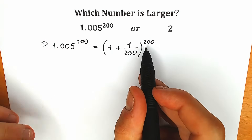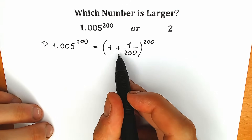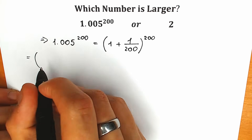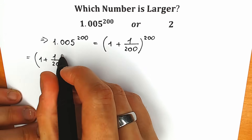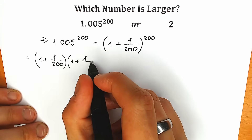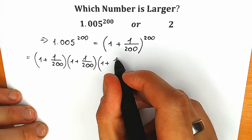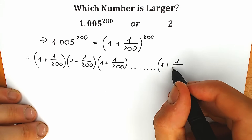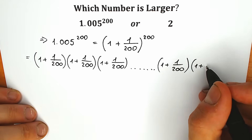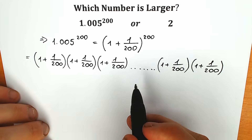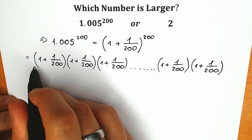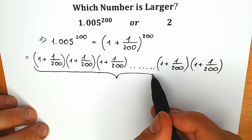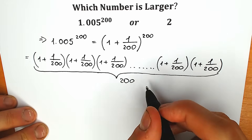What does it mean to have 200 as a power? Of course it means we need to multiply this expression by itself 200 times. So we have 1 plus 1 over 200, times 1 plus 1 over 200, times 1 plus 1 over 200 — with a lot of expressions in between — up to the last one, 1 plus 1 over 200. We have 200 parentheses in total, because we have a power of 200. So right here we have 200 elements.